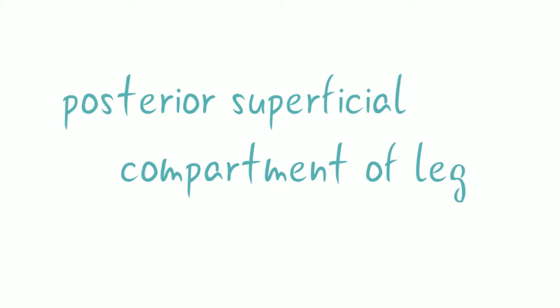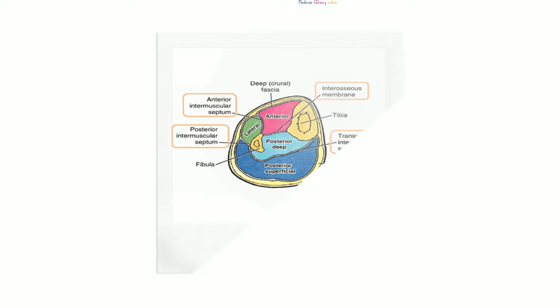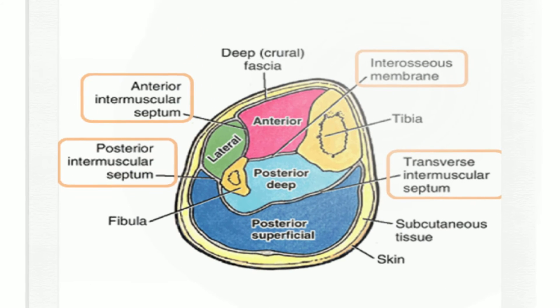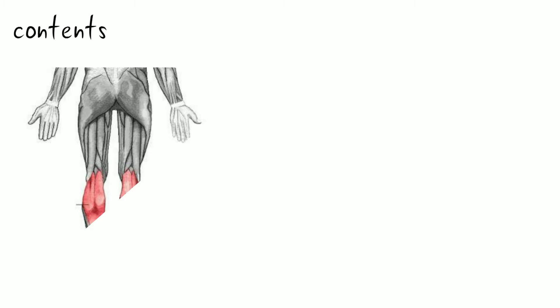The topic is the Posterior Superficial Compartment. It is separated from the Posterior Deep Compartment by the Transverse Intermuscular Septum, and separated from the Lateral Compartment by the Posterior Intermuscular Septum. Let's see the contents of the Posterior Superficial Compartment of the Leg.